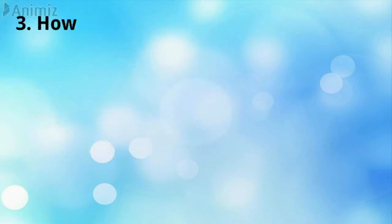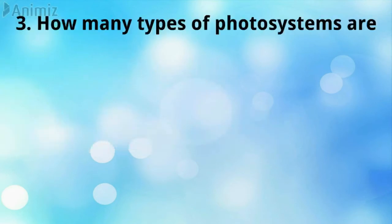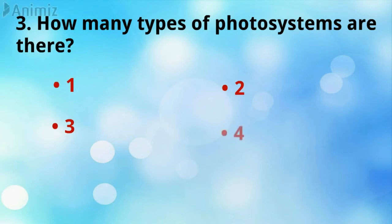How many types of photosystem are there? Two types.